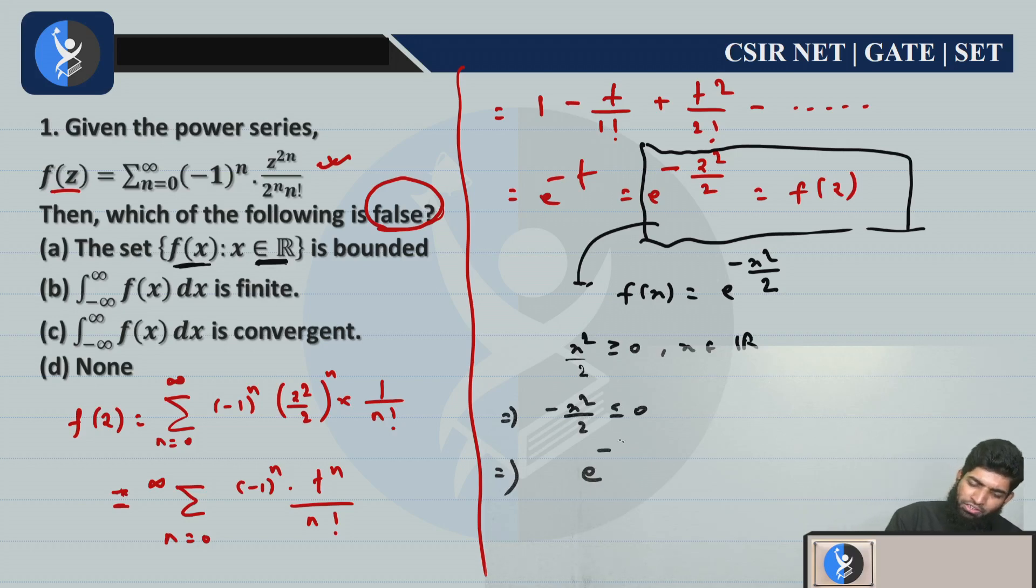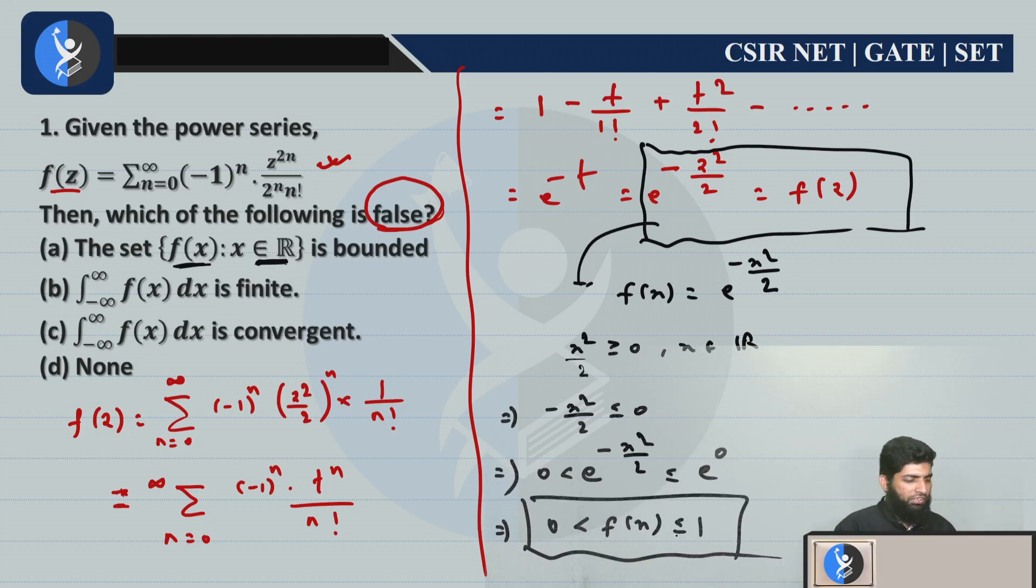And now when you take e to the power minus x²/2, this will be at most e to the power 0, and of course exponential is always positive. So overall this is your function f(x), right? And your function goes from 0 to 1. Of course this is bounded, and the boundary is 0 and 1. So of course this function is bounded, but the option is true. We have not taken that option yet.